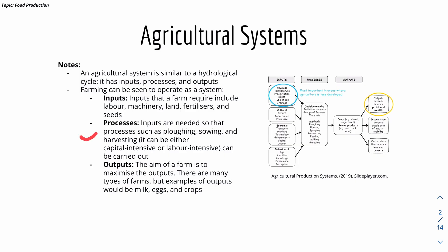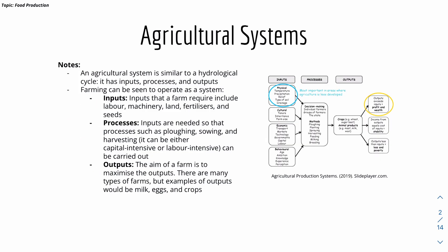Processes are what the inputs enable — such as plowing, sowing, or harvesting — because labor from the farm's inputs is needed to carry out these processes. For the output, the aim of the farm is basically to maximize yield or crop production. Examples of outputs include milk, eggs, and crops.